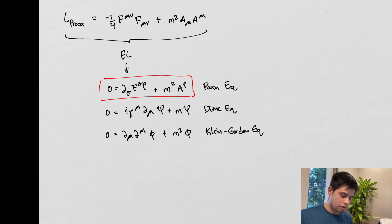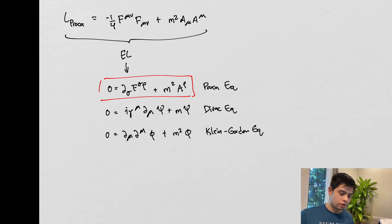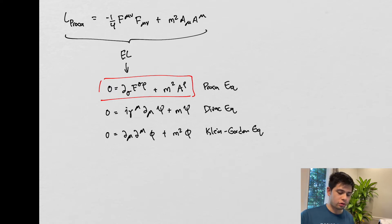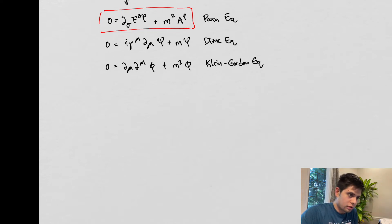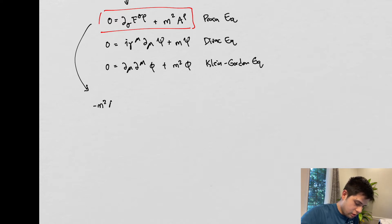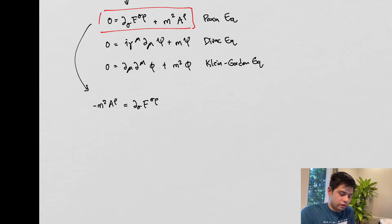What we want to do now — and from these we found the solutions — the solutions to the Klein-Gordon equation were scalars that oscillated, and the solutions to the Dirac equation were spinors, but their components oscillated. So let's take a look at what the Proca equation solutions look like. We can start off by really just rearranging this equation here. We can do this to get m² A_ρ = ∂_σ F^(σρ). Well, that's all fine and good — what can we do from here?